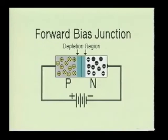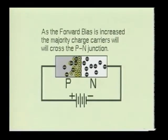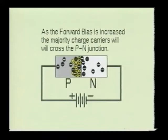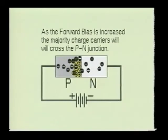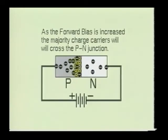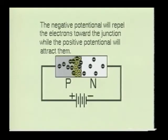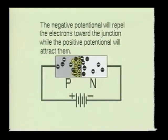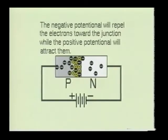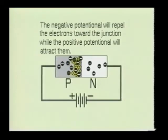When a positive bias is applied to the P-material and a negative bias is applied to the N-material of the semiconductor device, it causes the majority charge carriers to flow toward the P-N junction. This is referred to as a forward-biased P-N junction. If enough bias voltage is applied to the device, it will cause the depletion region to disappear and allow current to flow through the device. The negative bias on the N-material will attract the holes in the P-material and at the same time repel the electrons toward the P-N junction. The positive bias on the P-material will repel the holes toward the P-N junction and attract the free electrons toward the positive bias.